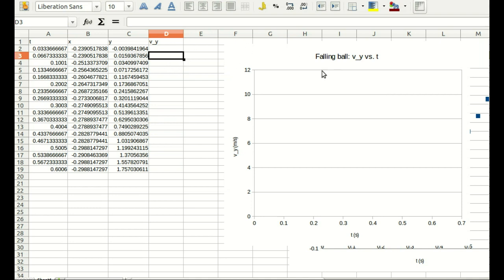So here's our falling ball data, and I've set up a graph so that we'll see the vy versus t as soon as I've generated it, and I'm going to generate it in this column here. But I'll warn you before I start out, I'm going to deliberately make a mistake that I often see students make. So here we go.